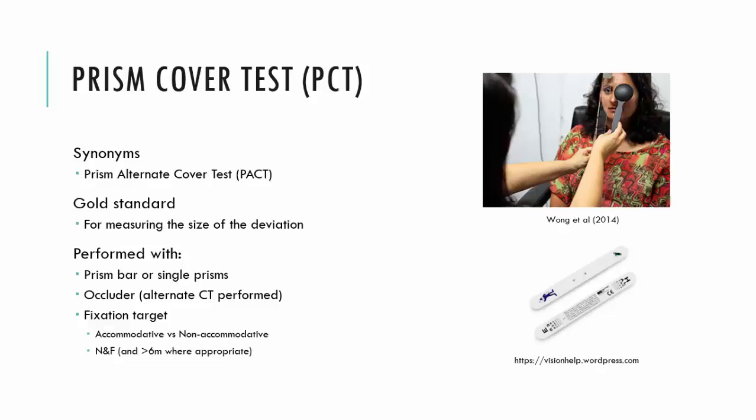And the reason you do this is so that you're able to control the accommodation as best possible. If you don't have control of that accommodation, there may be variability in the size of the deviation that you measure. So best to use letters if you can, and then if they're young children, then you're going to have to use pictures. But ask them to identify components of those pictures so that you're requiring them to constantly utilize their accommodation, or constantly trying to control that accommodation.